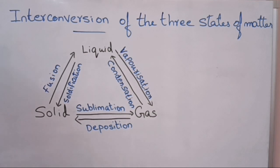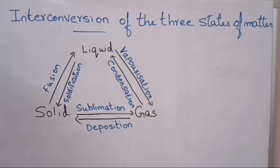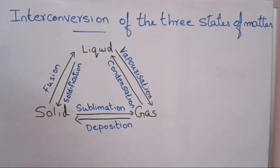This is the schematic diagram of the interconversion of the three states of matter. The process of converting solid to liquid is called fusion. Converting liquid back to solid is called solidification, also called freezing — for example, water to ice. Converting liquid to gas is called vaporization. Converting gas back to liquid is called condensation. You are familiar with steam condensation: when we place a lid on a pot of boiling water, we can observe water droplets on the surface of the lid, because of the condensation of water vapor.